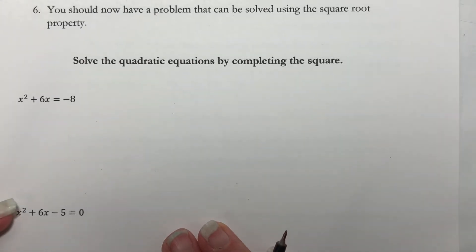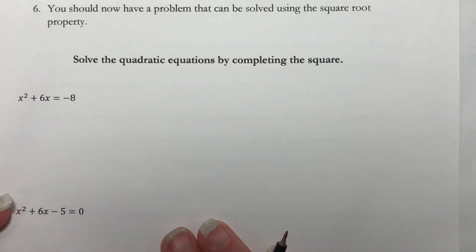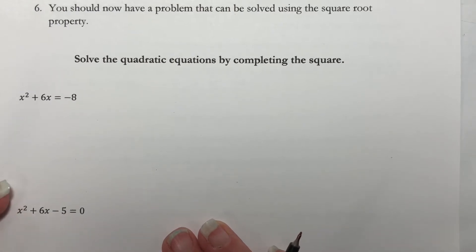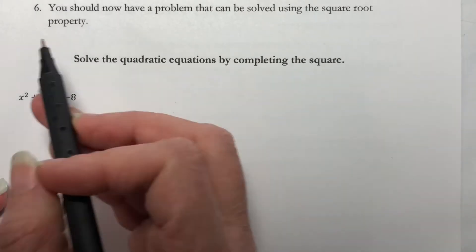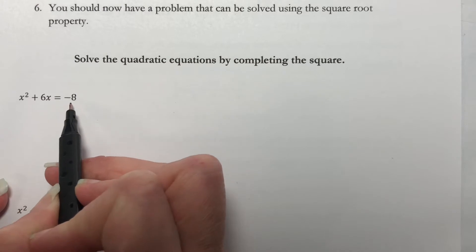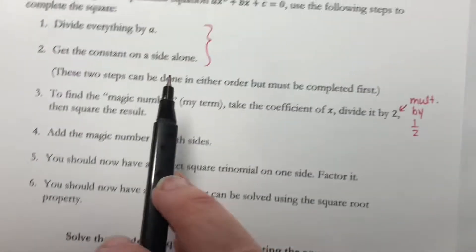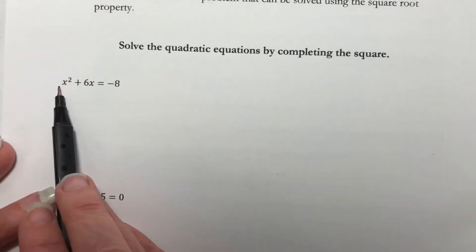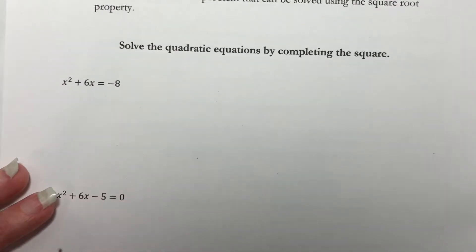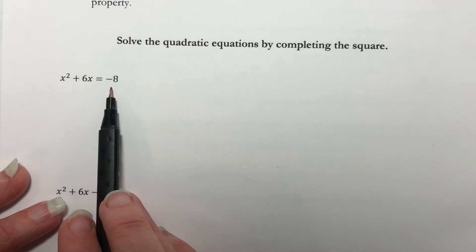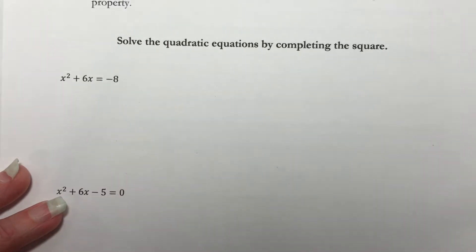This is part 3 of section 1.5. We've just gone through the process of completing the square and now we're going to work some problems. We're going to solve this using completing the square. I have x squared plus 6x is equal to negative 8. Our first step is to divide everything by a, and a is the number in front of x squared — that's a 1, so dividing by 1, we're done. Our next step is to get the constant on the side alone, and it's already there. So our first two steps are done.